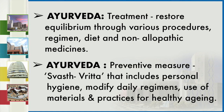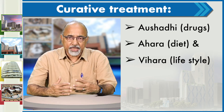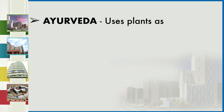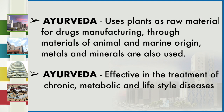The preventive measures in Ayurveda are Swastha Vritta, which include personal hygiene, modifying daily regimes, and use of materials and practices for healthy aging. The curative treatments are Aushidhi, Ahara and Vihara — which is the drug, the lifestyle and what you eat. Ayurveda uses plants as raw materials for drugs and also utilizes materials of animal and marine origin. Metals and minerals are also used. Ayurveda is effective in the treatment of chronic, metabolic and lifestyle diseases.